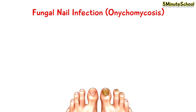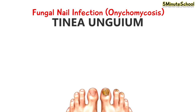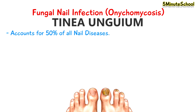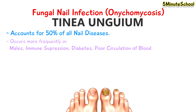Onychomycosis is a fungal nail infection, also known as tinea unguium, and it accounts for about 50% of nail diseases. Onychomycosis occurs more frequently in males, also in those with immune suppression, diabetes, or those with poor blood circulation.